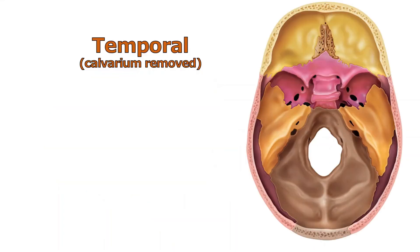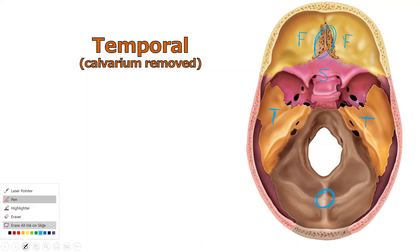The calvarium has been removed, so now we can see deep into the skull. The temporal bone is here, the occipital bone is here, the frontal bone here, the ethmoid bone here, and this big pink structure is the sphenoid bone. Now we're oriented, even though we haven't gone through all those bones yet.